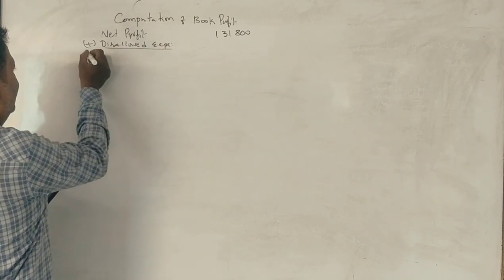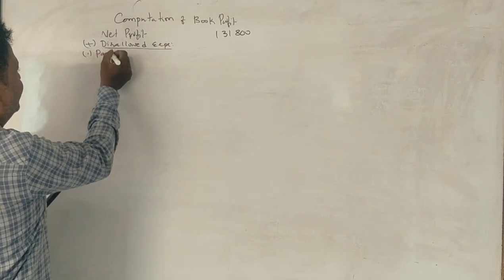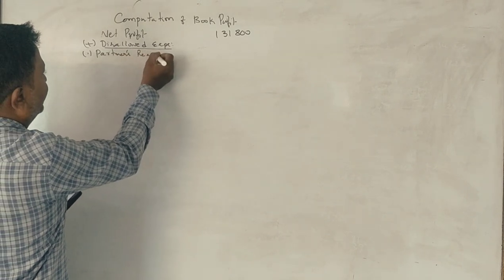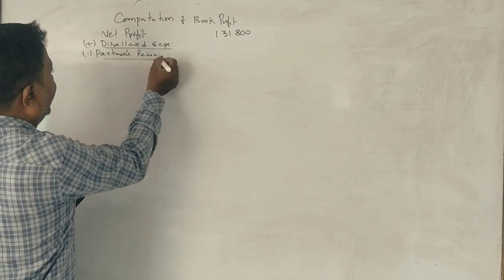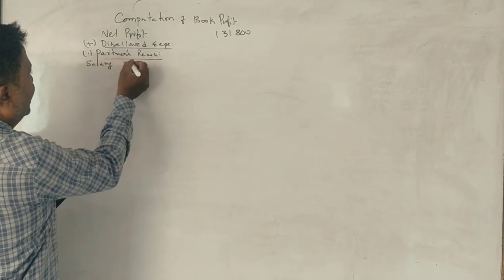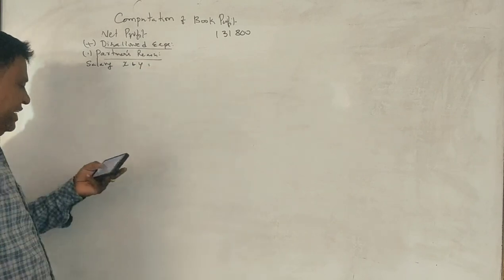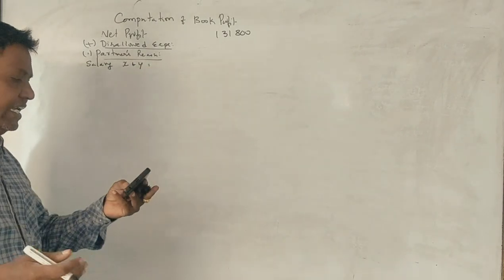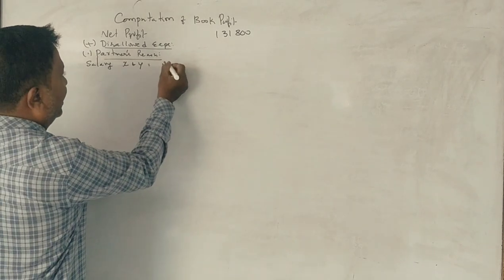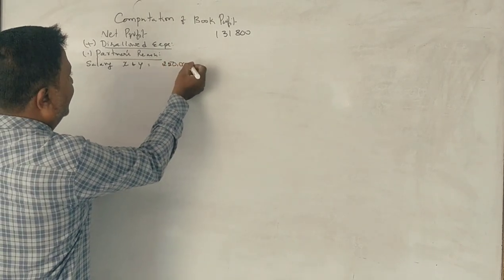So if you are working, the first thing is partners remuneration. Partners remuneration - this is the salary of X and Y. If you are working, Rs. 1,31,800, total Rs. 2,50,000.